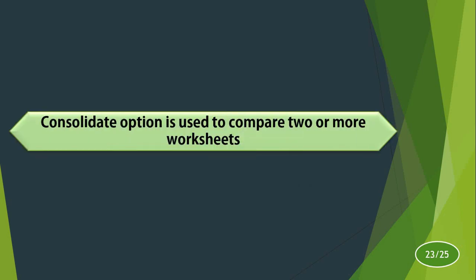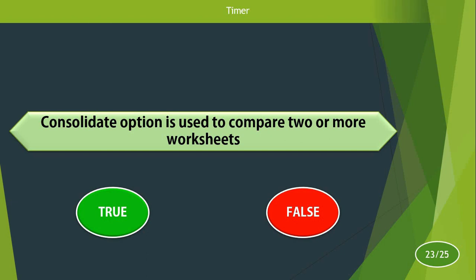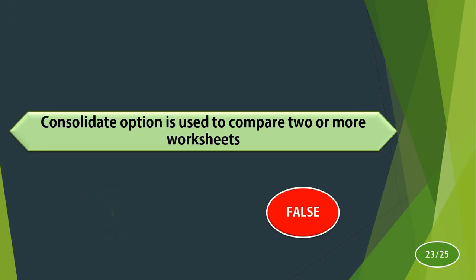Consolidate option is used to compare two or more worksheets. True or false? The answer is false. The Consolidate option is used to consolidate or combine data from separate sheets into a master worksheet. So the answer is false.